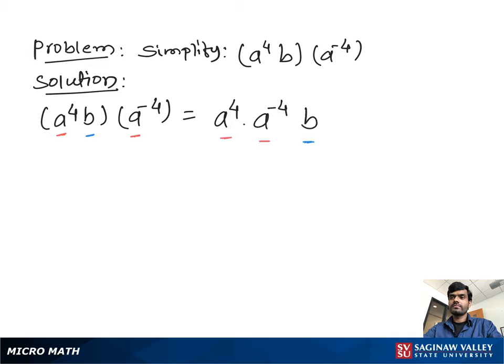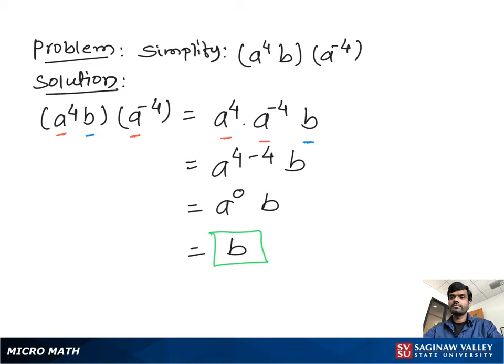Using exponent properties, we can write a to the power 4 minus 4, and b. Then we get a to the power 0 and b. According to exponent properties, any term raised to the power 0 equals 1, so we get b.